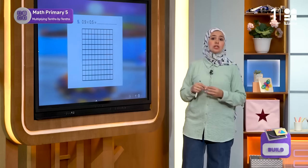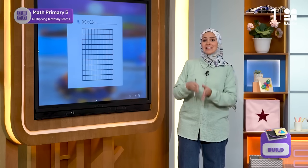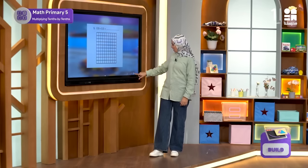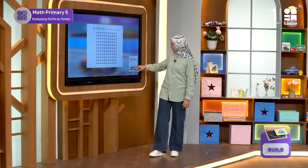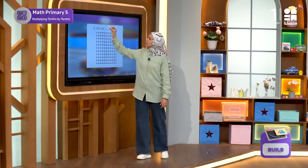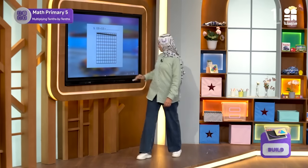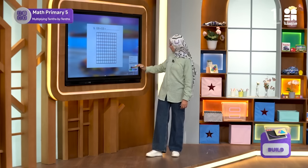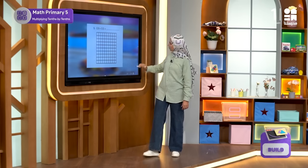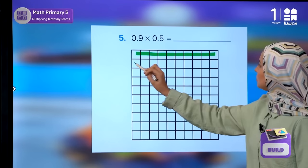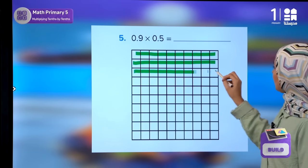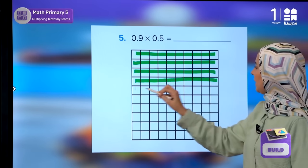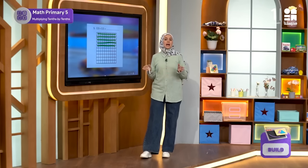Now let's color the grid to check our answers. I'm going to color five green rows to represent 0.5. I will start with the green color, coloring one, two, three, four, and five rows.